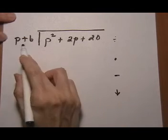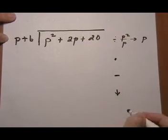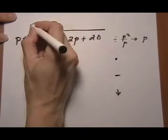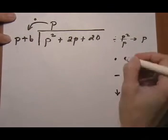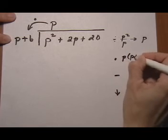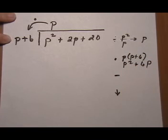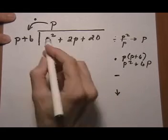First term by first term. P squared over p. That leaves us with a p. The answer goes up top. We take that answer and we multiply it. Distribute through the p plus 6. P times p plus 6 gives us p squared plus 6p.